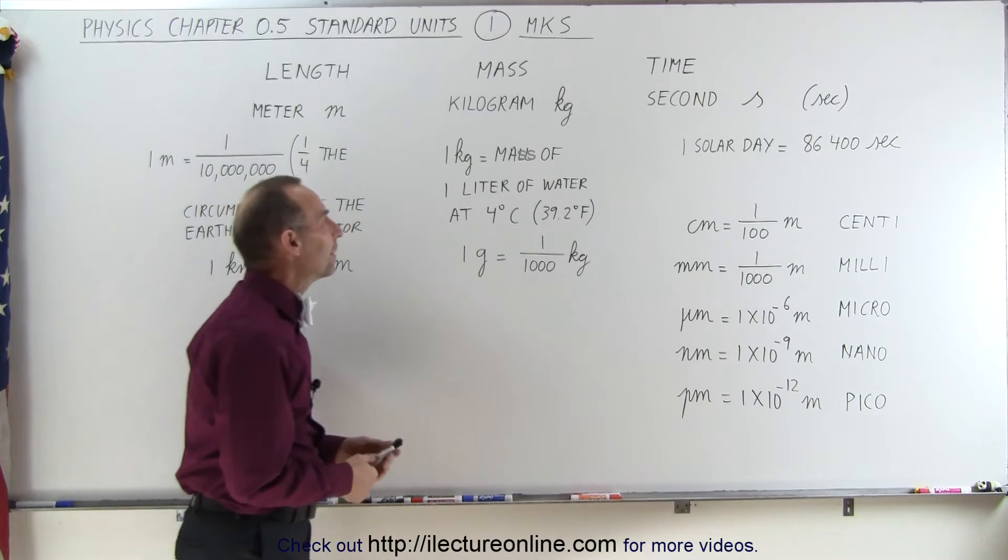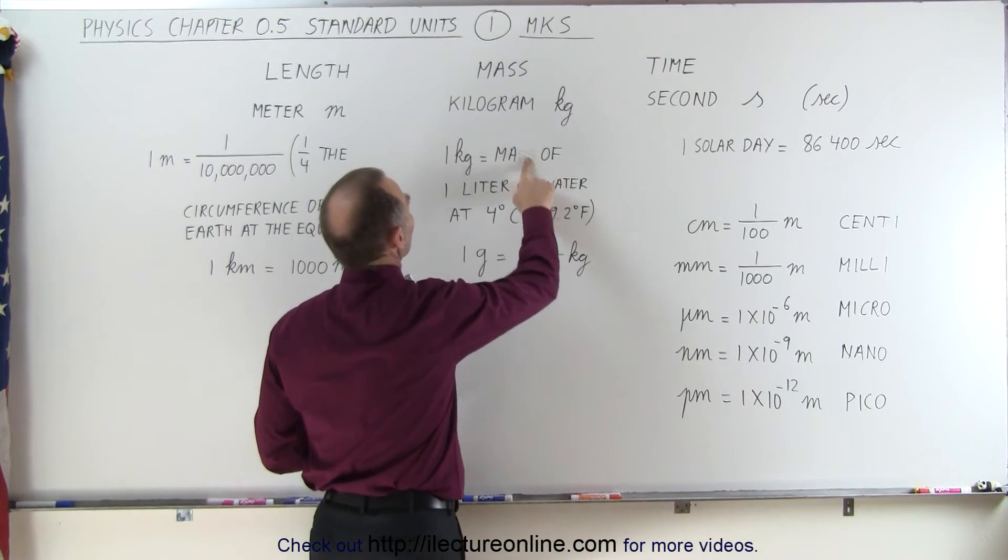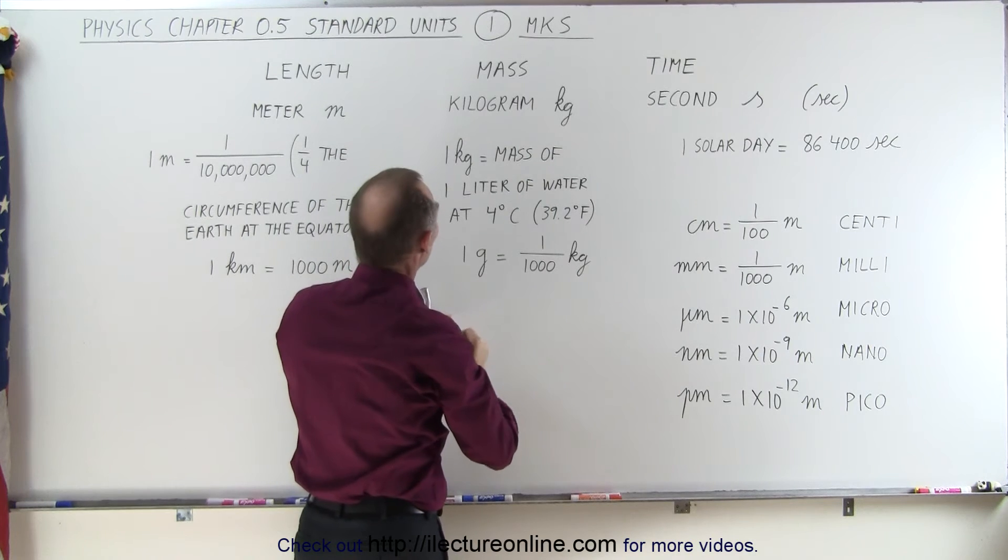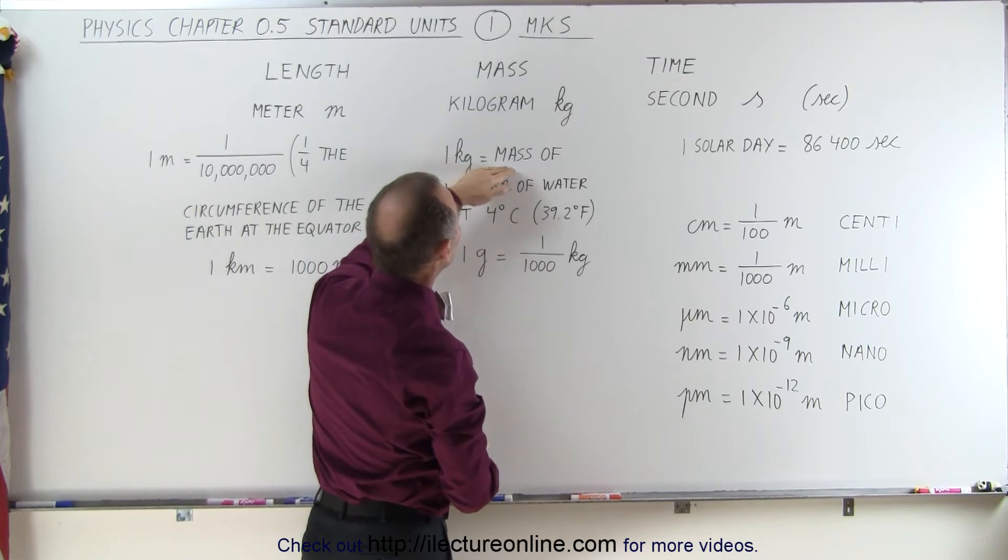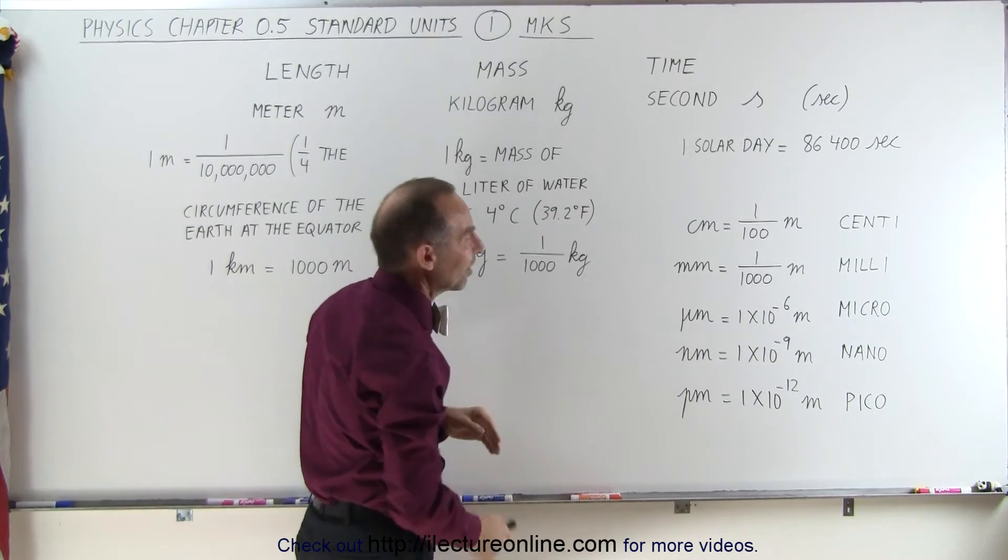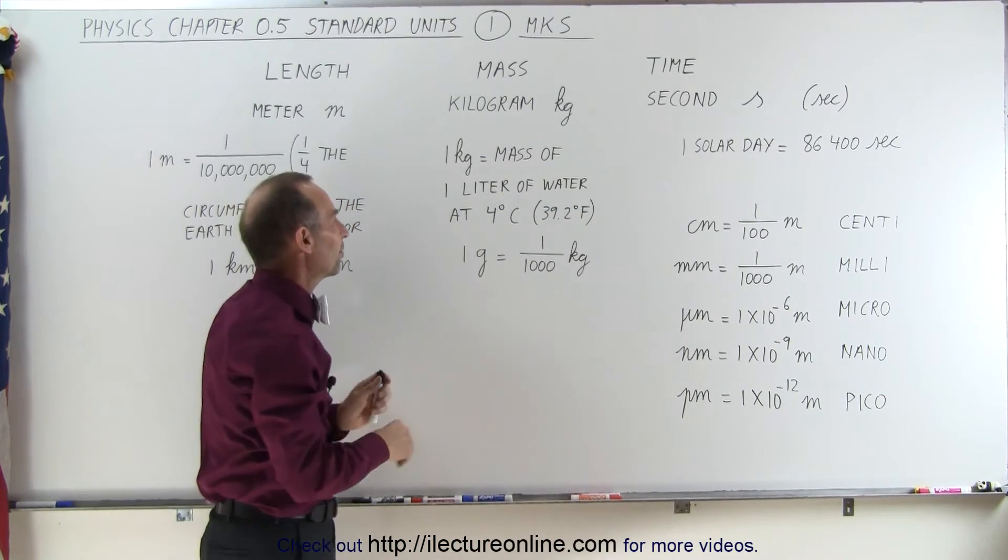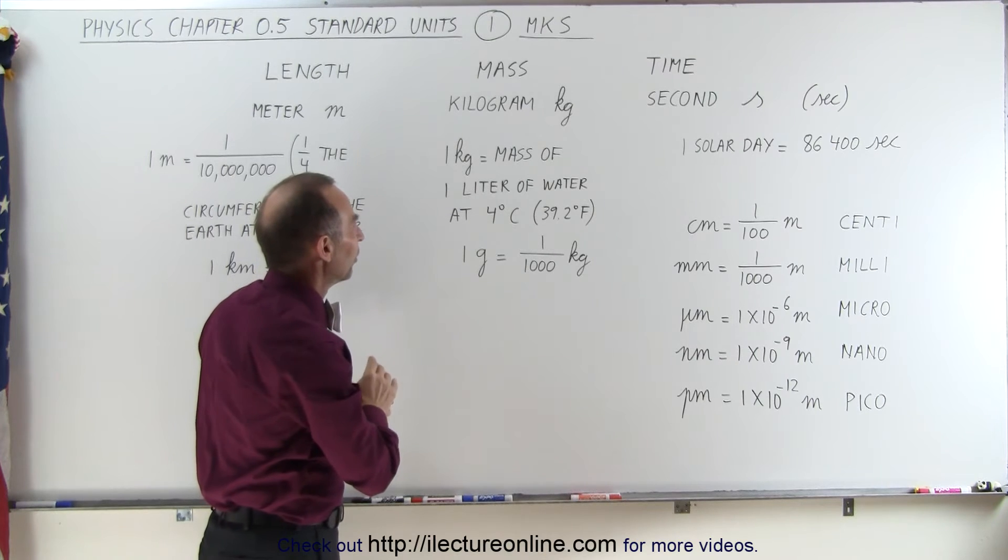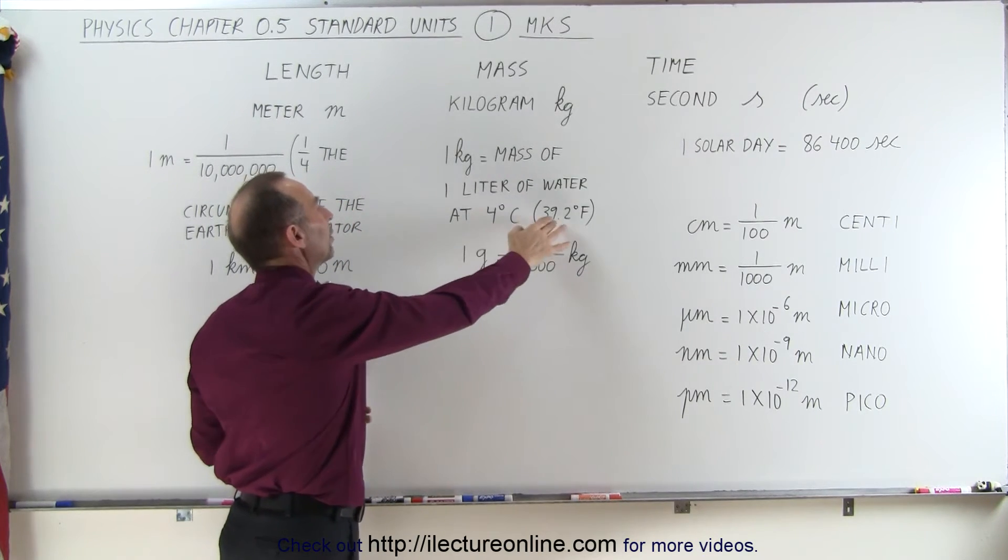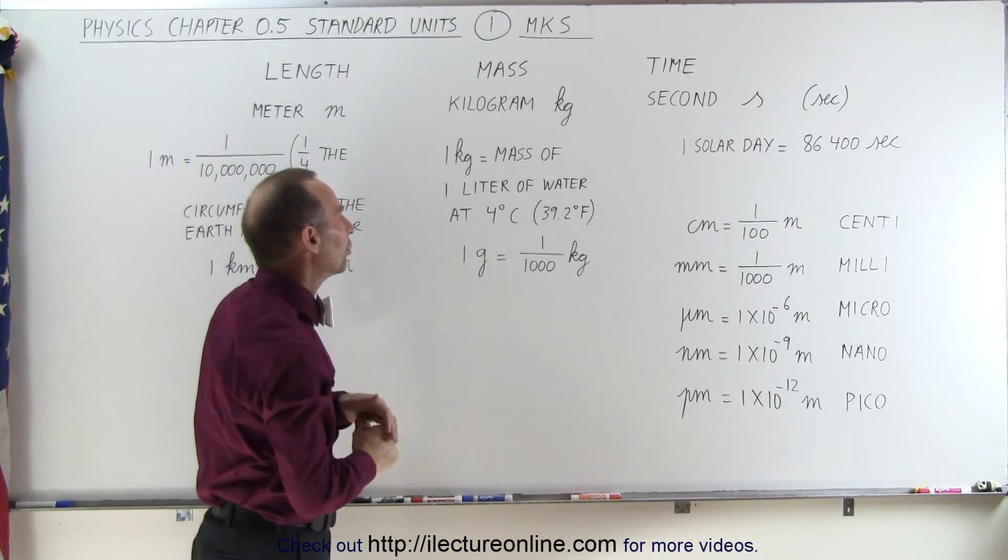Mass, or one kilogram, can be, oh, and I have this misspelled here. That should be mass, not mall. Well, one kilogram is equal to the mass of one liter of water at four degrees centigrade. Now, that's not exactly 100% correct, but close enough. So, one kilogram can be defined as one liter of water at four degrees centigrade, which is also 39.2 degrees Fahrenheit.